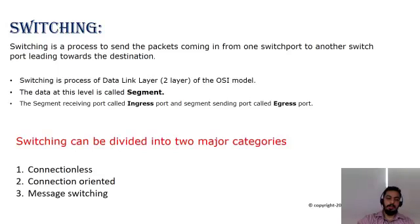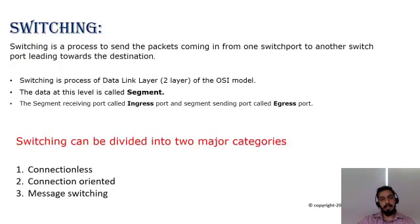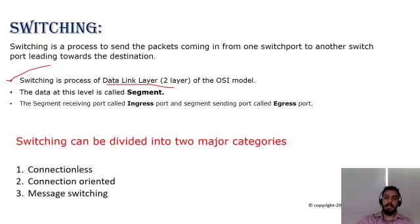To understand switching, you need to know that it is a mechanism where once a packet is received on a device, the processing of that packet is known as switching. Switching only works at Layer 2 of the OSI model, which is also known as the data link layer.